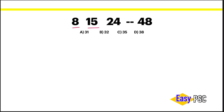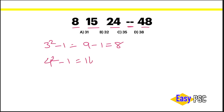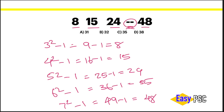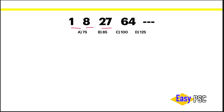8, 15, 24, dash, 42. The square is 1-4, the square is 1-1. 3-1, 9-1. 8, 4-1. 14-1. 15, 5-1. 25-1. 24, 6 square minus 1, 36, minus 1. 38, 7 square minus 1. 48, 38-1. 48, 38. 38, 28, 34, dash.